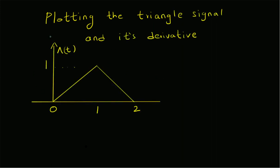The triangle function is given by this graph. The value of the signal is one at t equal to one, zero at t equal to zero, and zero at t equal to two. It basically has two ramp signals — one with positive slope and the other with negative slope — and it has a time support from zero to two.